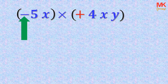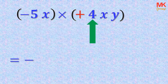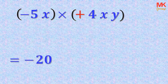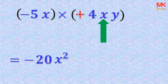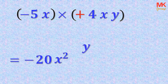The negative operation in the first term multiplies the positive operation in the second term, giving a negative result. The number 5 multiplies 4, giving 20. The x variable multiplies the x variable, giving x to the second power. The first term, negative 5x, doesn't have the y variable, so we just carry the y variable from the second term and keep it in the result. That's the answer: negative 20x squared y.